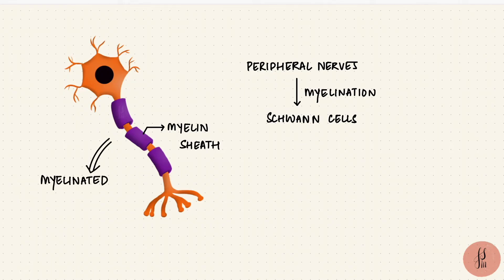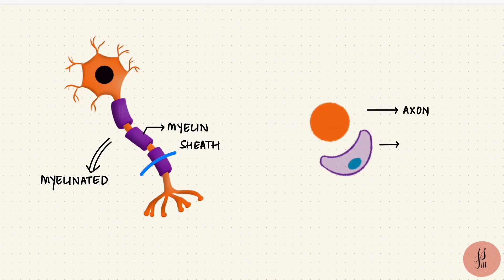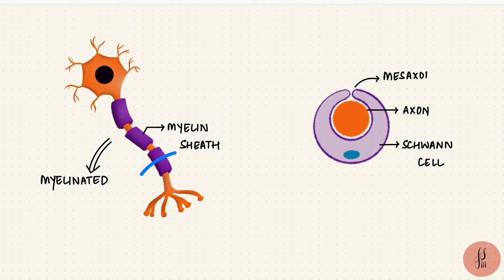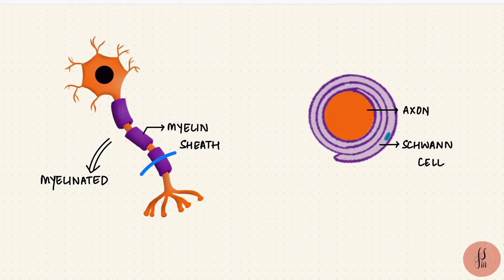So if we section it horizontally and look at it from above, this is the axon and this is the Schwann cell. The axon invaginates the Schwann cell and the opposing cell membranes form the mesaxon. That mesaxon elongates and winds around the axon. The myelin sheath is made up of lipids and proteins and it forms an electrical insulator.